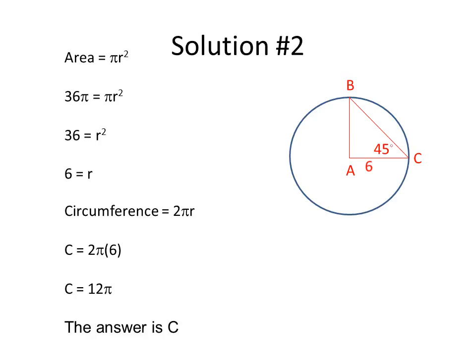A few things to keep in mind: this problem contained a two-step solution, which is common for SAT questions. It's not always going to be a straight find-the-radius or find-the-area problem — it's generally going to be a two-step process. Here we started with the area, found the radius, and then used the radius to find the circumference. Also notice that the circle had a triangle with a 45-degree angle — we never used that. There will be extraneous information put in the problem to try to trick you. Make a plan, solve step by step, and disregard the extra information.